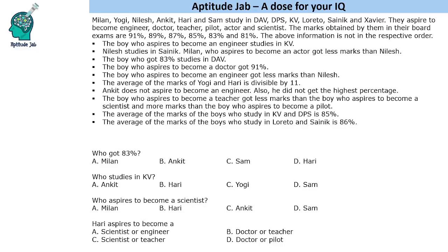Hello everyone, welcome to Aptitude Lab. This set says that there are six students who study in different schools. They aspire to become engineer, doctor, teacher, pilot, actor, and scientist, and they obtained different marks in their board exams. Some information is given about them, and based on it we have to find out who studies in which school, got how much marks, and aspires to become what.